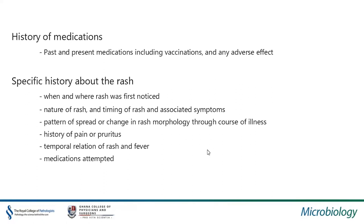Specific history about the rash includes when and where the rash was first noticed, the nature of the rash, the timing, and associated symptoms. Is the rash appearing before the prodrome, or after the fever, or after symptoms have subsided? Pattern of spread of the rash or change in rash morphology through the course of illness — some rashes evolve from one morphology type to another and spread centrifugally from the trunk or centripetally from the extremities. History of pain, itching, or pruritus is equally important, as is the temporal relation of rash and fever. History of any medication attempted before or at presentation is also important as it could modify the character of the rash.